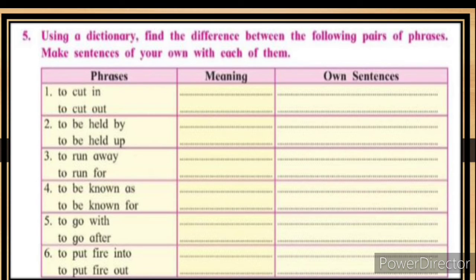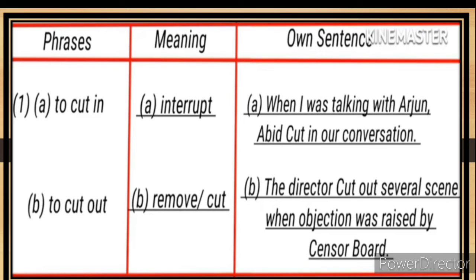Fifth: using a dictionary, find the difference between the following pairs of phrases and make sentences of your own with each of them. (a) Phrase: 'to cut in' — meaning: interrupt. Sentence: When I was talking with Arjun, a bit cut in on our conversation. (b) 'To cut out' — meaning: remove or cut. Sentence: The director cut out several scenes when objection was raised by the censor board.